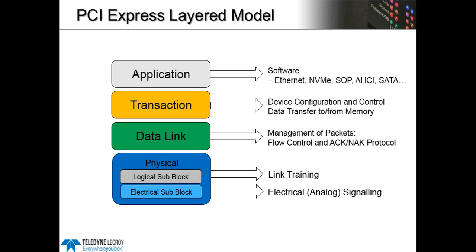Looking at this model, starting at the bottom, the physical layer comprises two blocks. There's the electrical sub-block, where the analog signaling is defined — that's where you would use an oscilloscope to see what the actual signal looks like. This part changed significantly between Gen 1, Gen 2, and Gen 3 PCI Express, and it's completely different from PCI, as the changeover was from a parallel bus to a serial link. Extracting the physical layer out allows bandwidth and electrical signaling to be changed without changing the upper layers in the stack. You can even have PCI Express over an MPHY physical link, which takes the same software stack but has a different physical layer.